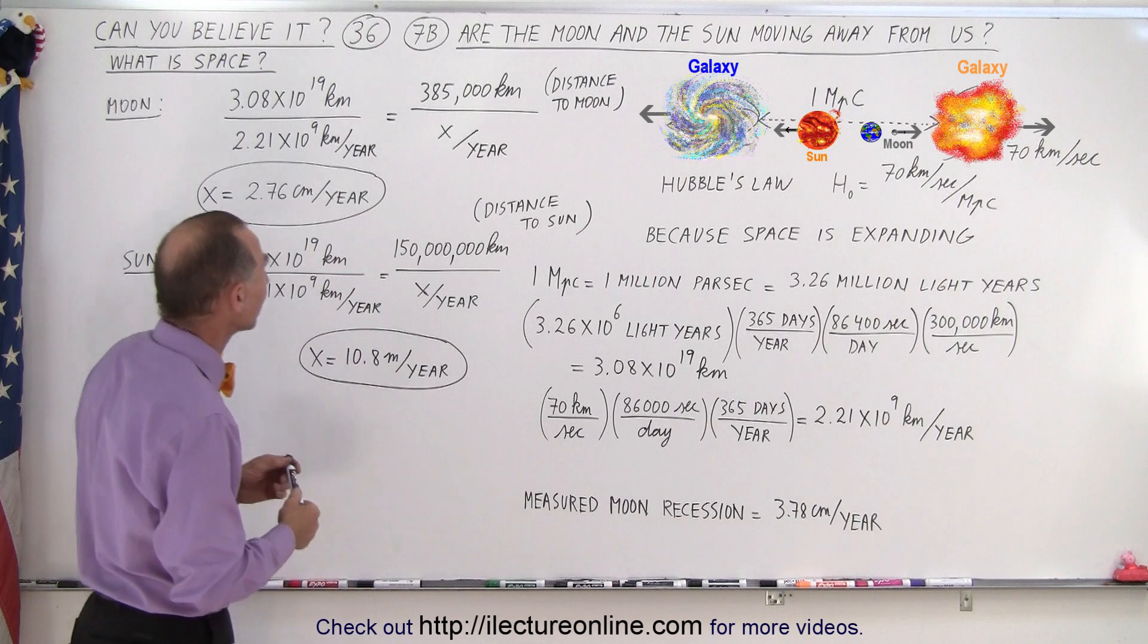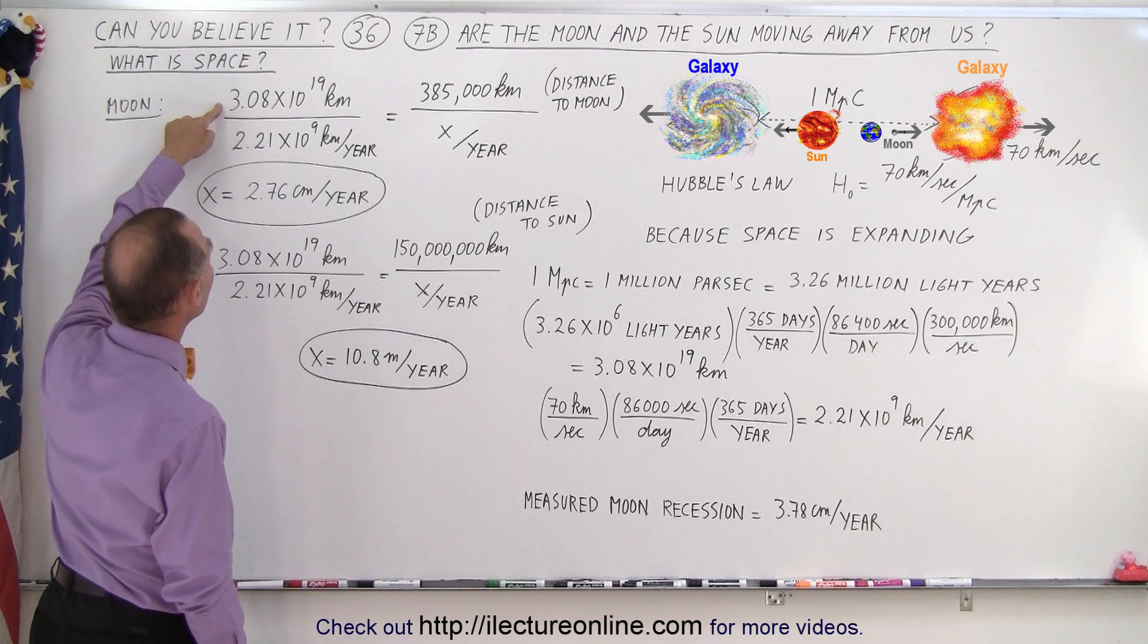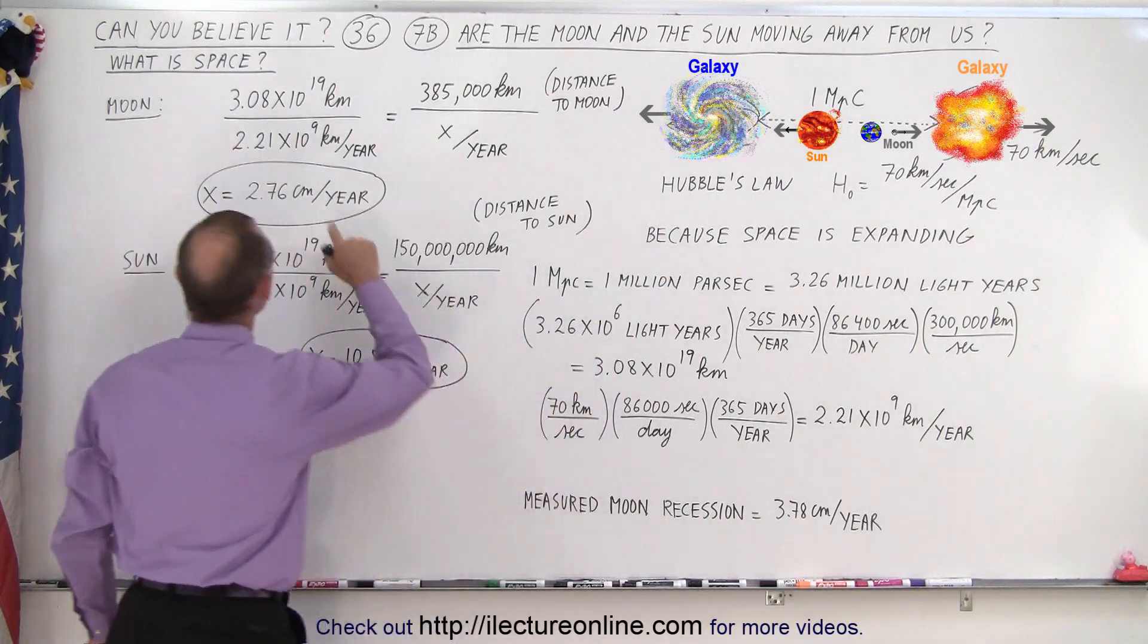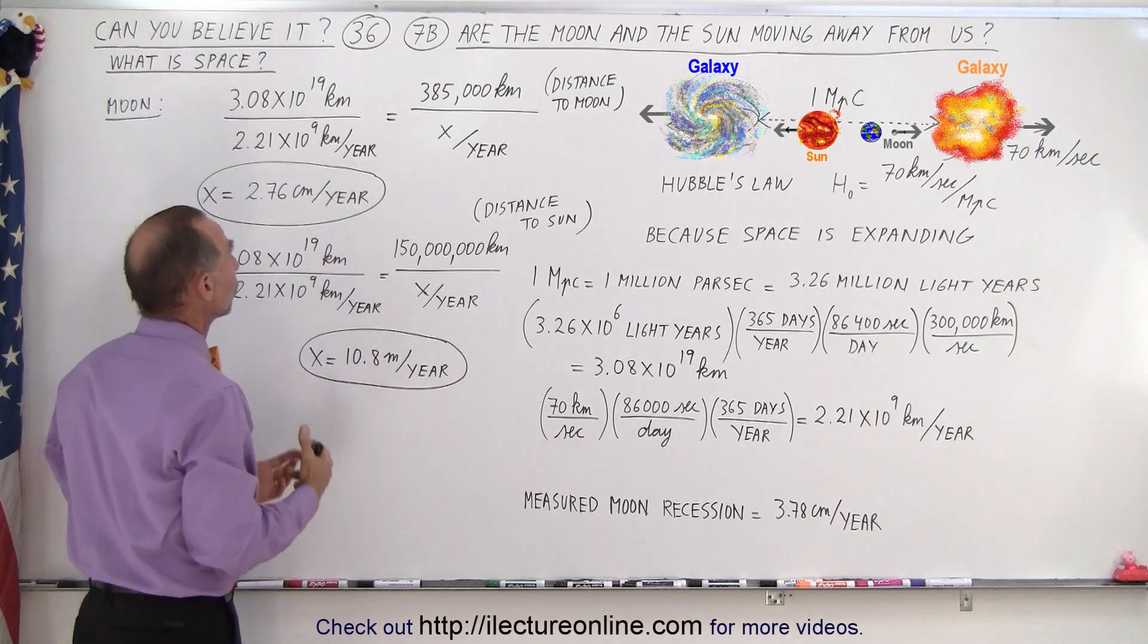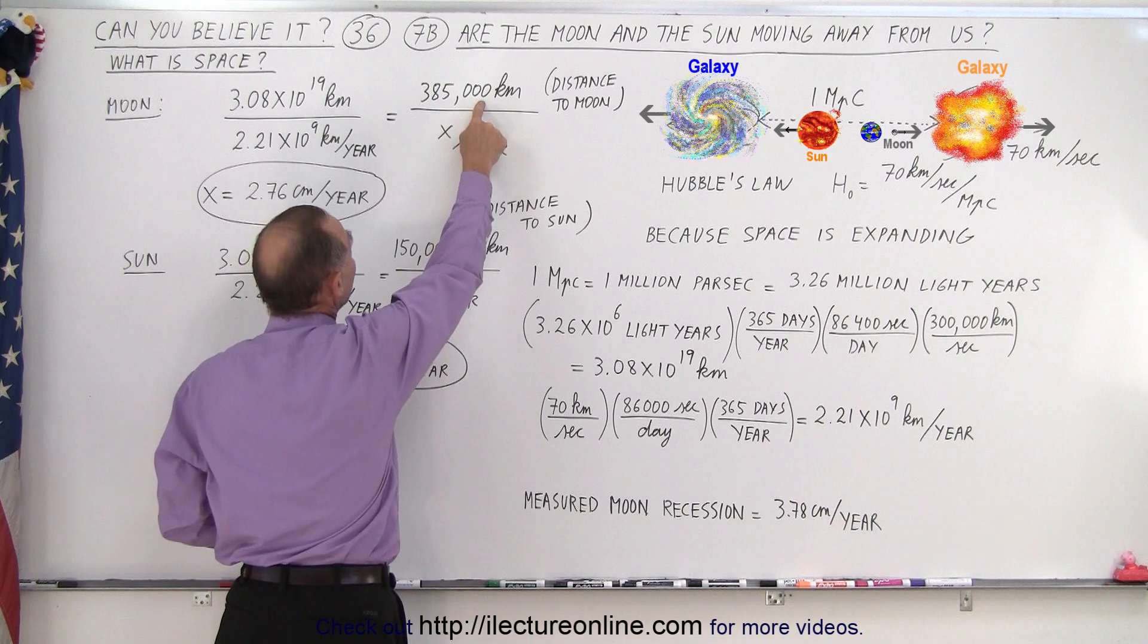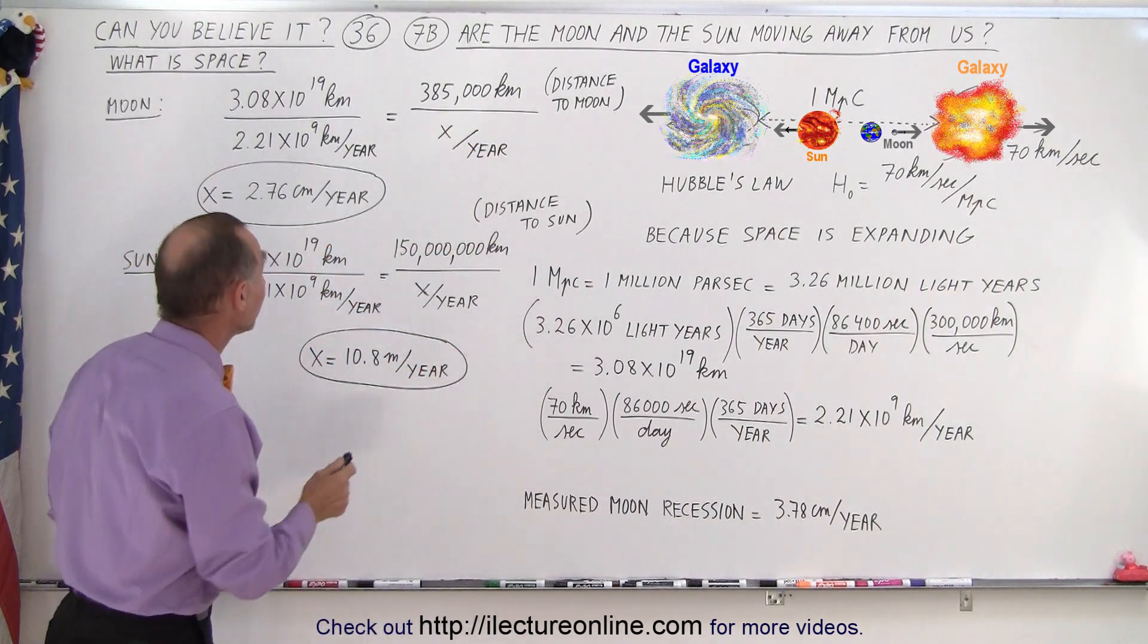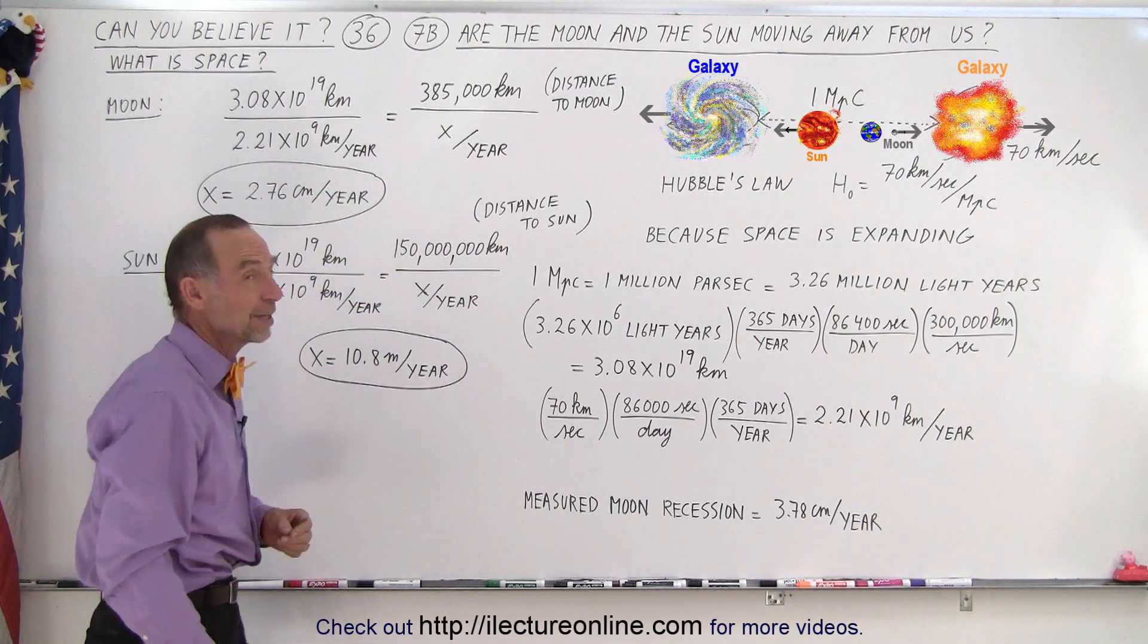So at least let's calculate that. We can say that if something is 3.08 times 10 to the 19 kilometers away, which is 1 megaparsec, it will move apart 2.2 billion kilometers during the year. And if we scale that to the distance between earth and the moon, then how far would that be in a year as far as the distance expanding between the earth and the moon? And if you solve this equation for x, you get 2.76 centimeters.